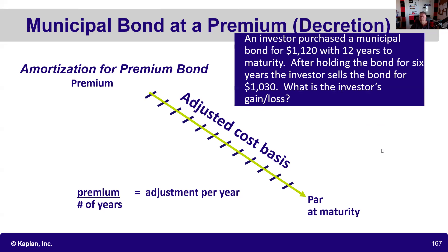Here's a test question example: an investor purchased a municipal bond for $1,120. As a test taker, you have to recognize this is a muni bond purchased at a premium. We're not going to let you decide when to realize that $120 loss, because you might want to take it all at maturity to offset gains elsewhere. It has 12 years to maturity, so if held to maturity you would have neither gain nor loss — you would have amortized it downward over those 12 years.